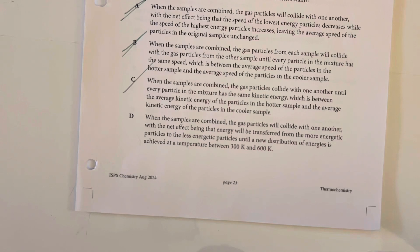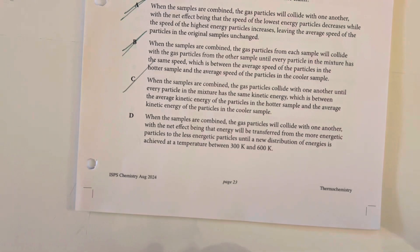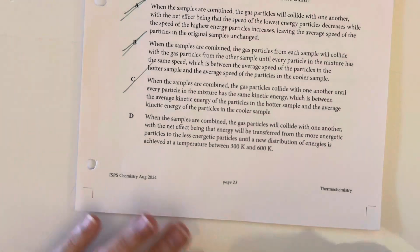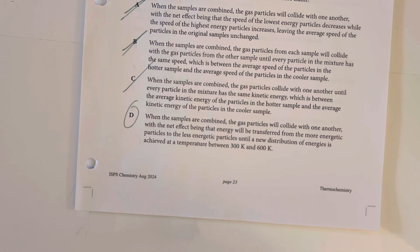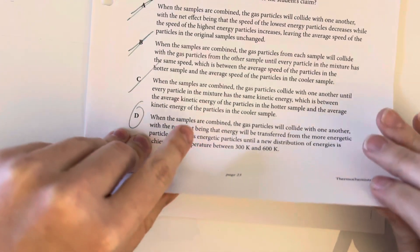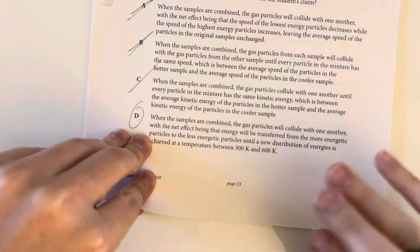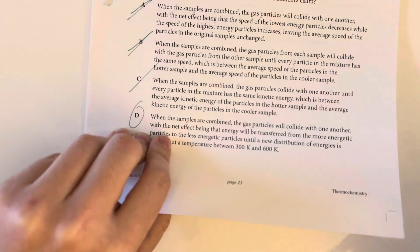Option D says when the samples are combined, the gas particles will collide with one another, with the net effect being that energy will be transferred from the more energetic particles to the less energetic particles until a new distribution of energies is achieved at a temperature between 300 and 600 Kelvin. That matches our prediction — energy transfers from high-energy to low-energy particles, eventually reaching an equilibrium between 300 and 600 Kelvin.